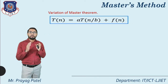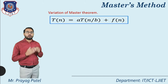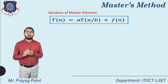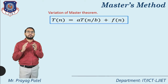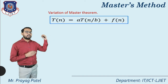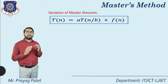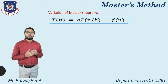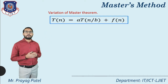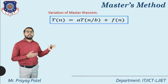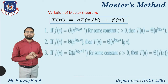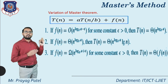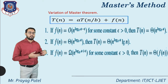Now let's consider some variations in the master's method. The previous three equations are the normal equations of the master's method. Now consider some additional equations for the variation of the master's method. These also require the same relation T(n) = aT(n/b) + f(n).